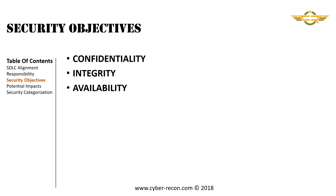To understand categorization, you'll need to understand the security objectives. Security objectives are confidentiality, integrity, and availability. These are often referred to as the CIA triad, which will be used throughout your security career.